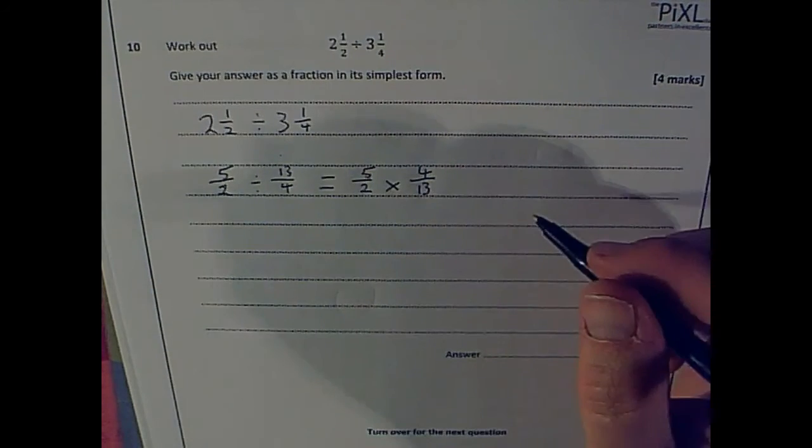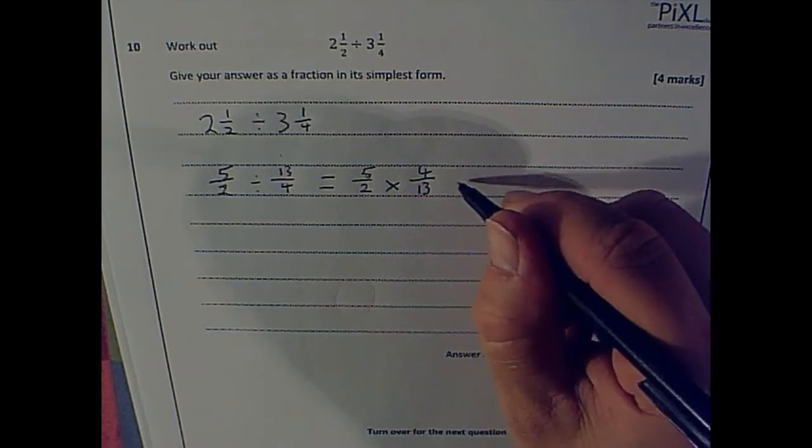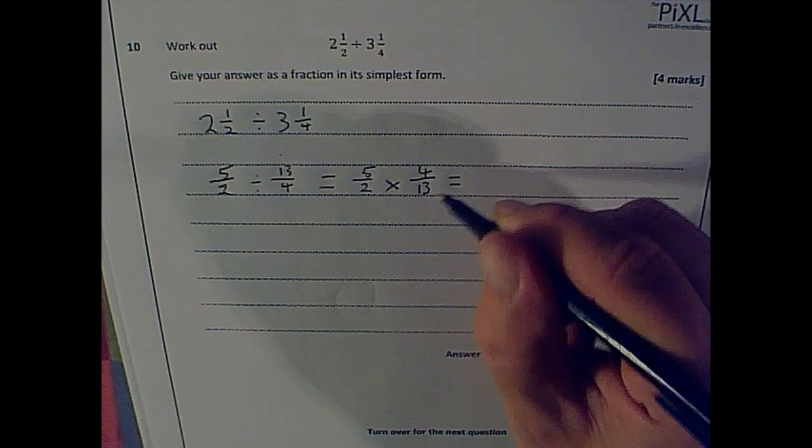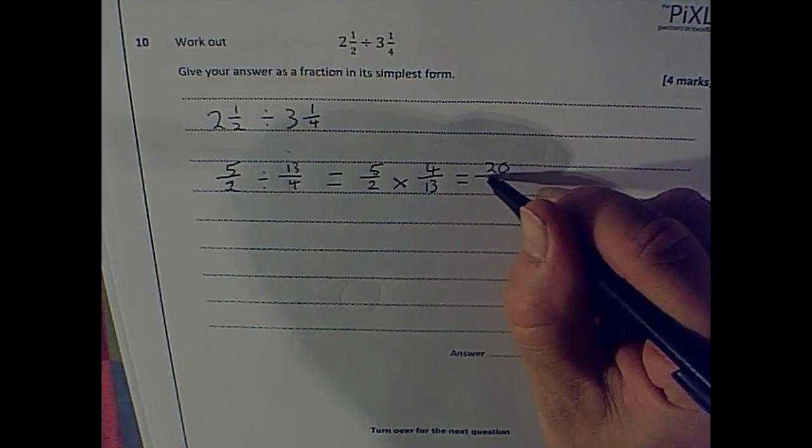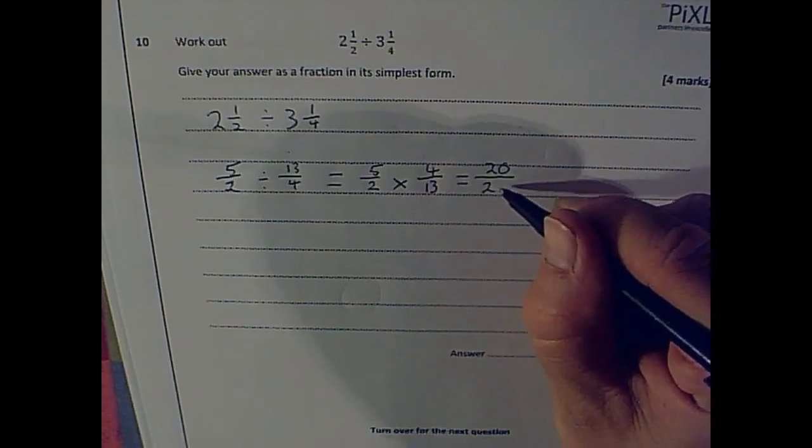And now I just multiply that out. So that is the same as five times four is 20. Two times 13 is 26.